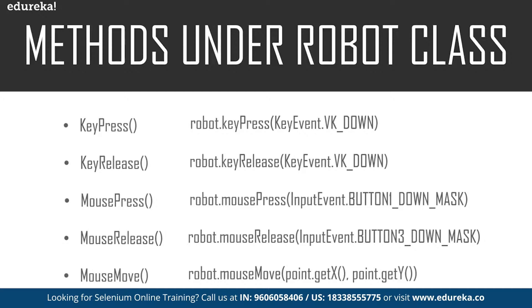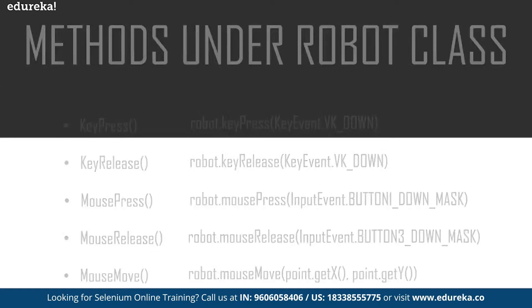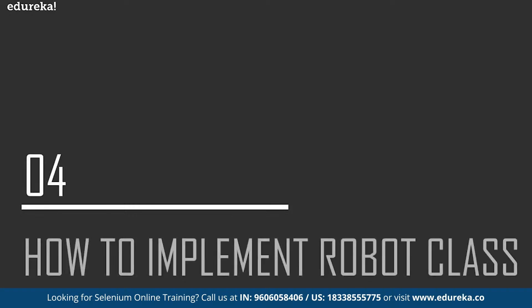The mouseMove command goes something like this: robot dot mouseMove, and you specify the coordinates of the X axis and also the Y axis. These are the methods that control the mouse and keyboard functions. Now let's understand how to implement this Robot class in Selenium by looking at a live implementation.